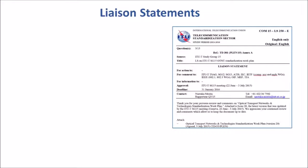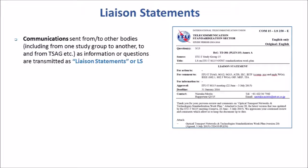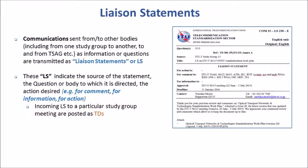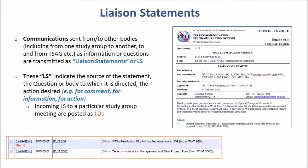What are liaison statements? Liaison statements are simply communications sent from the study group or to the study group from other bodies — could be another study group, TSAG, or even an external body like another standards development organization. These are called LS, and they always indicate the source, the question or body to which they are directed, and the action desired. All incoming LSs to a particular study group meeting are posted as TDs, as are outgoing liaison statements when agreed by the group.